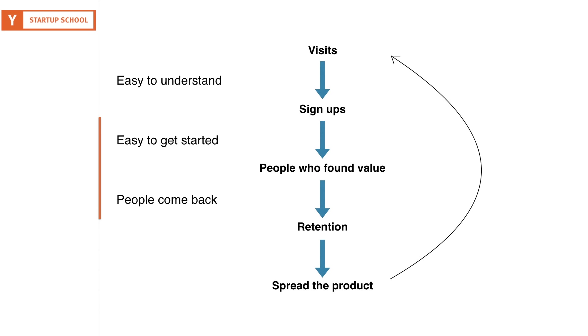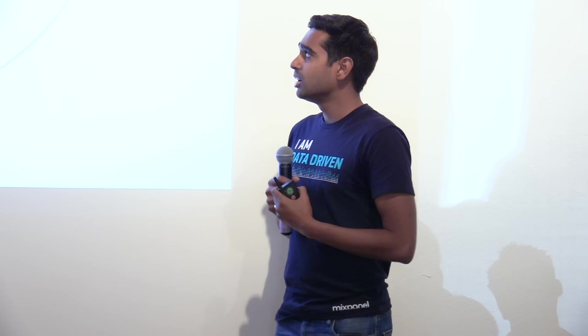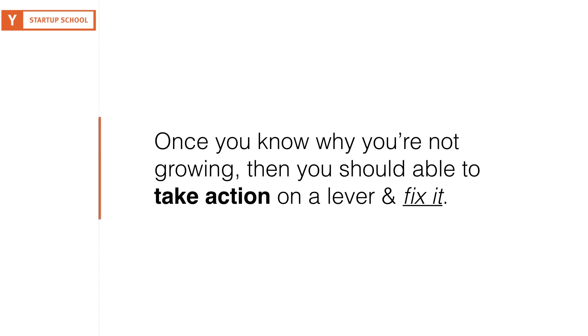Linking those two ideas together: you have this funnel of people going from visits to eventually retaining and spreading the product. On each step, you're trying to solve one of these three problems: is it easy to understand, is it easy to get started, are people coming back because they find it valuable? And then it loops. Even if you're Airbnb with thousands of people, optimizing each of these steps is never-ending. No matter what scale you're at, you will always be changing something.